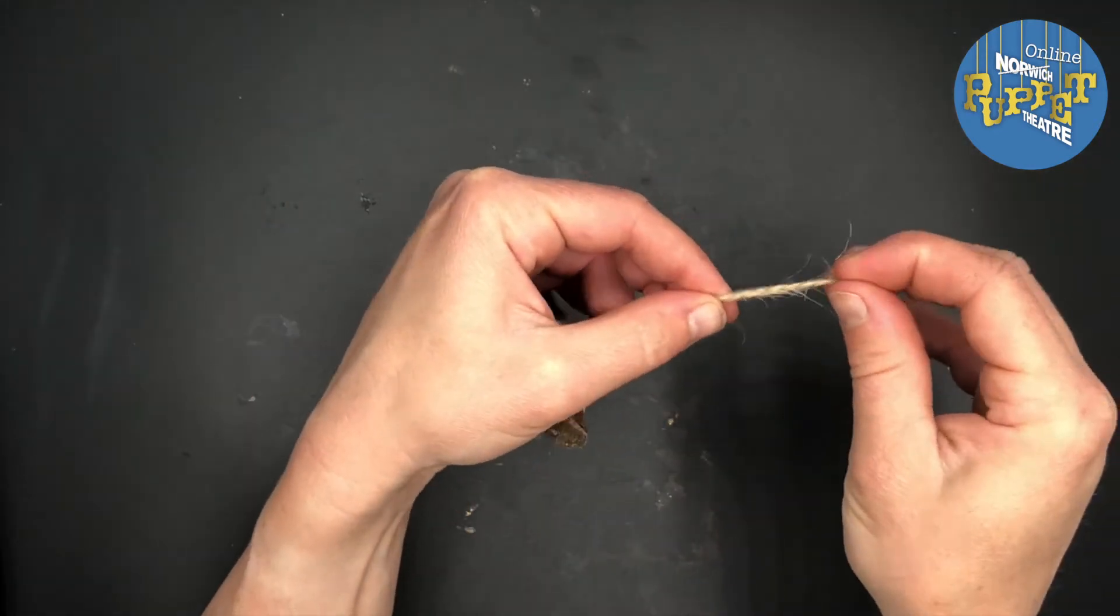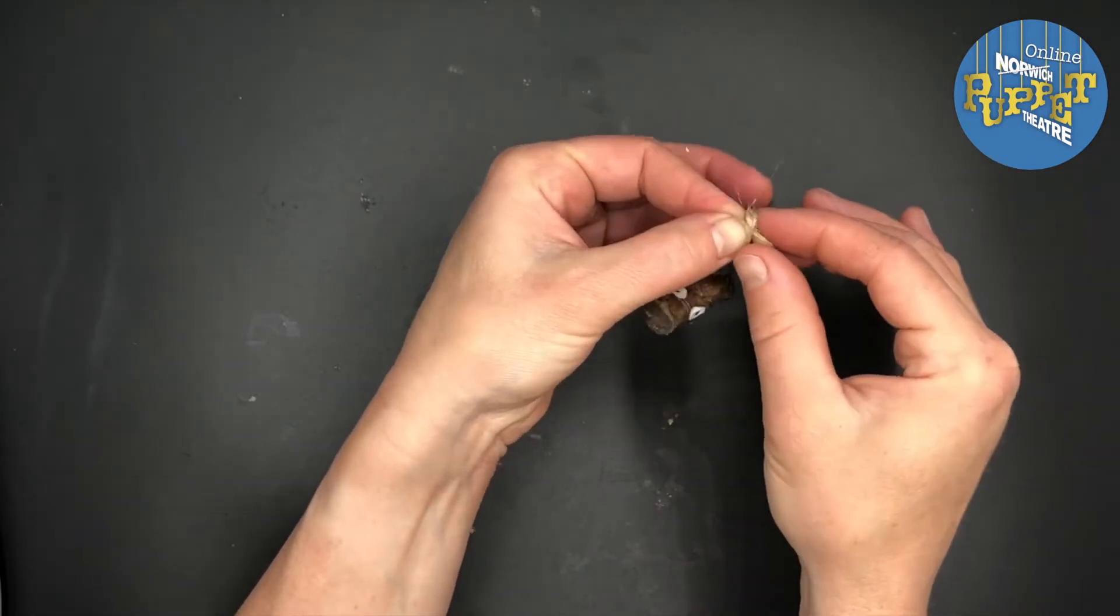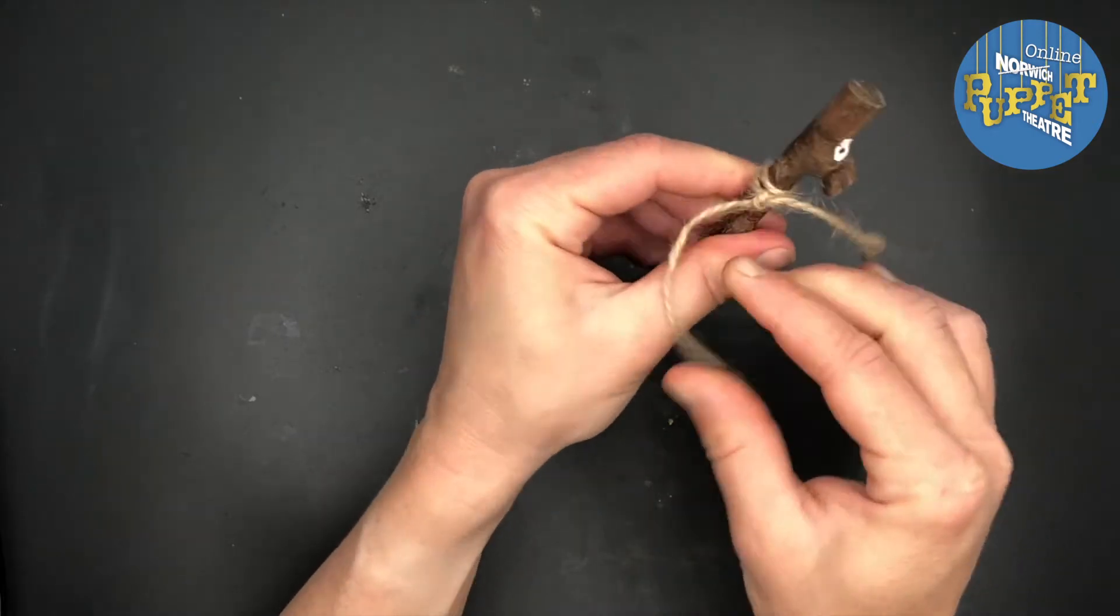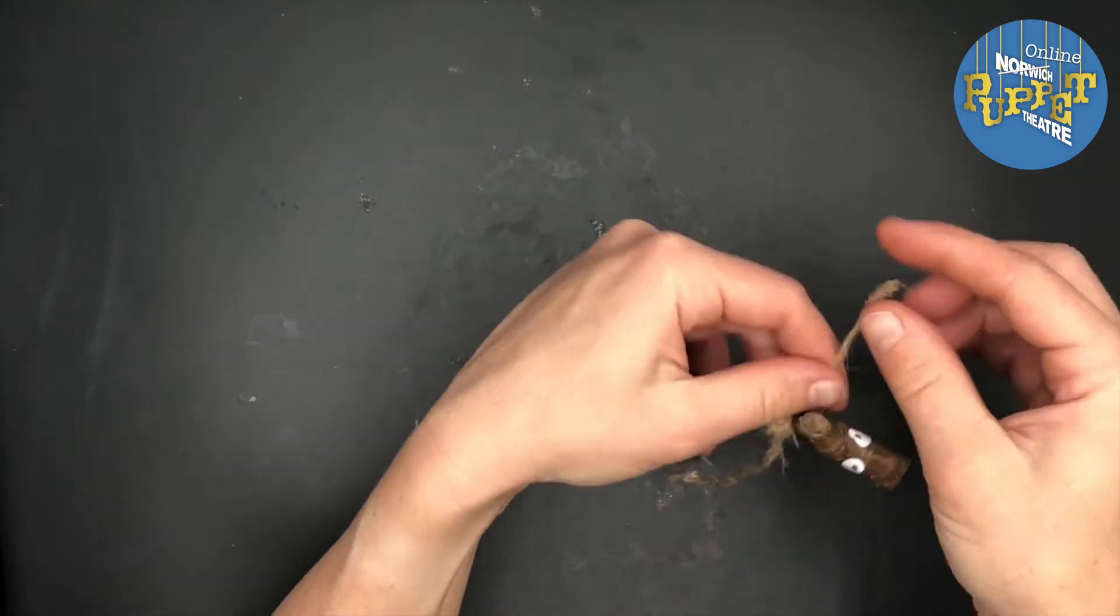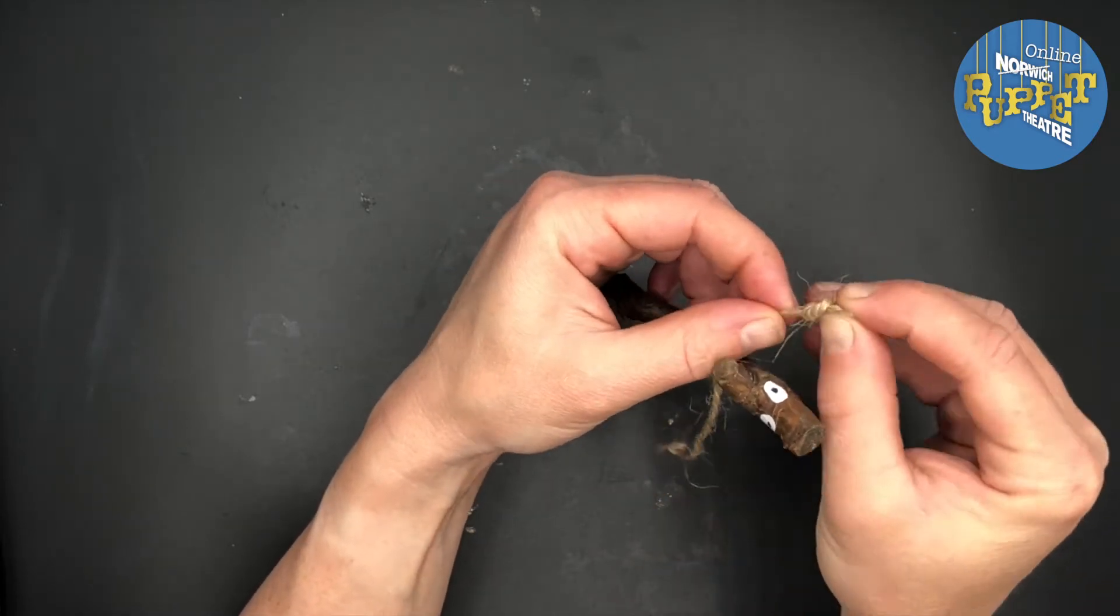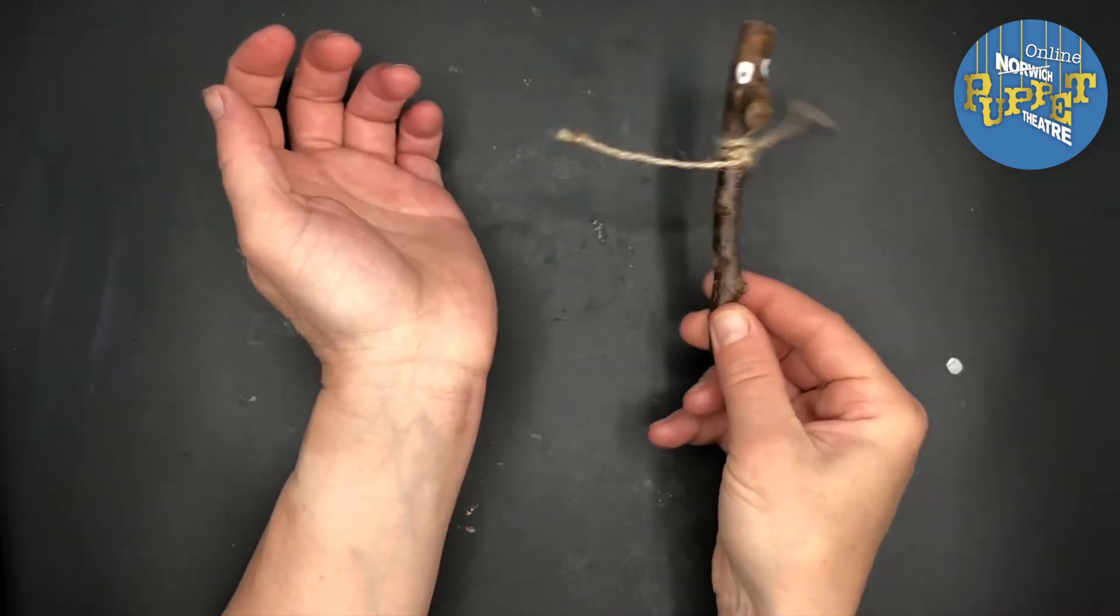And then taking the end of each piece of twine, just tie a knot in the end there where the hand would be. That extra weight can be quite helpful in for your puppet's movements. Make sure you do the other hand, and there we go, one stick puppet.